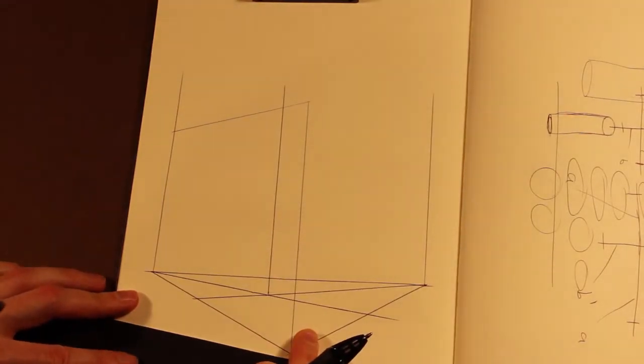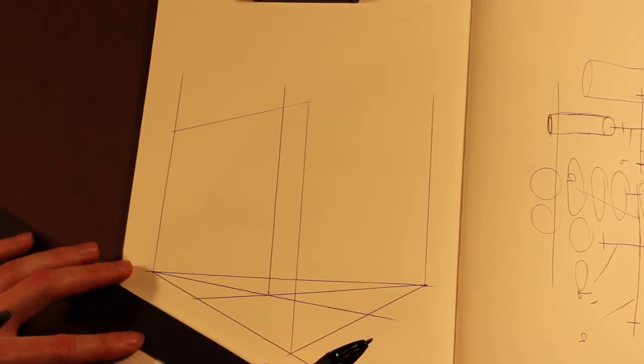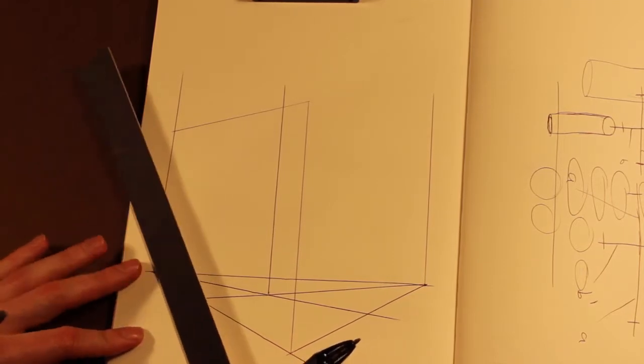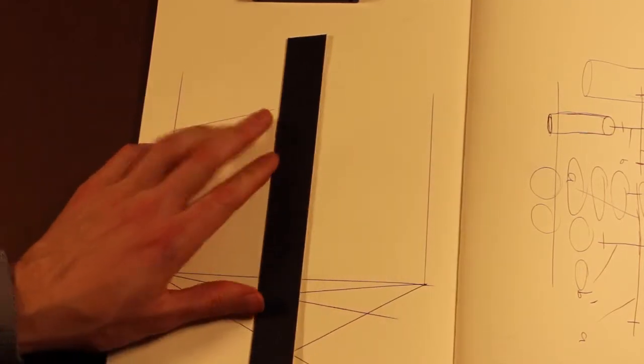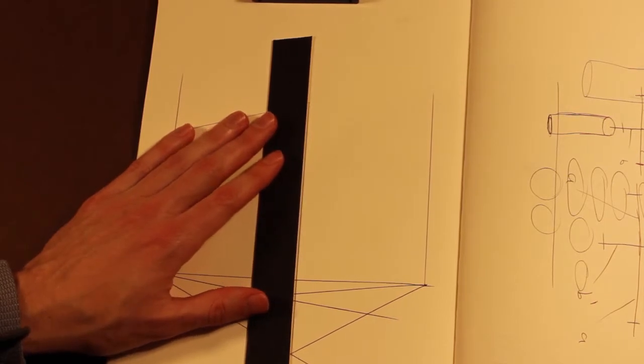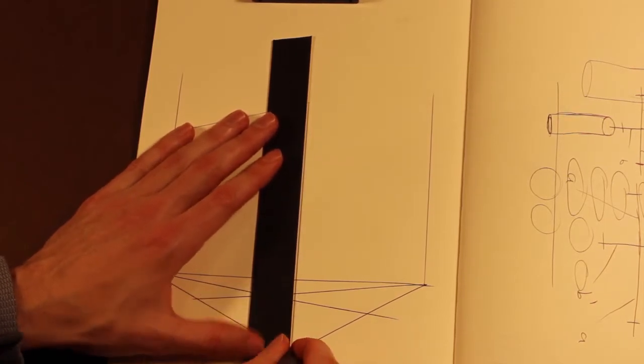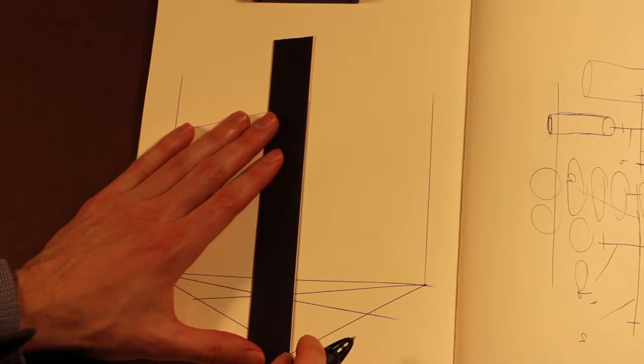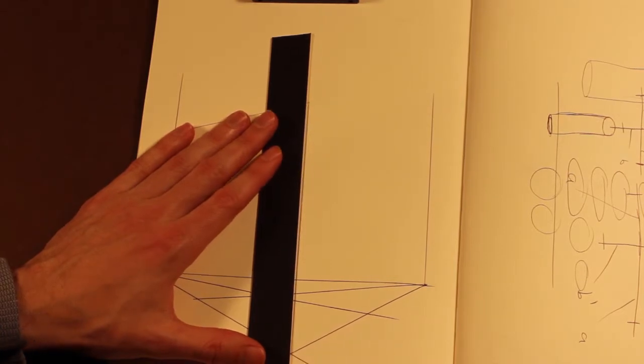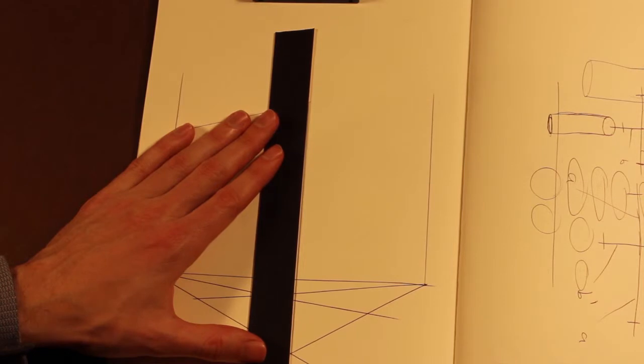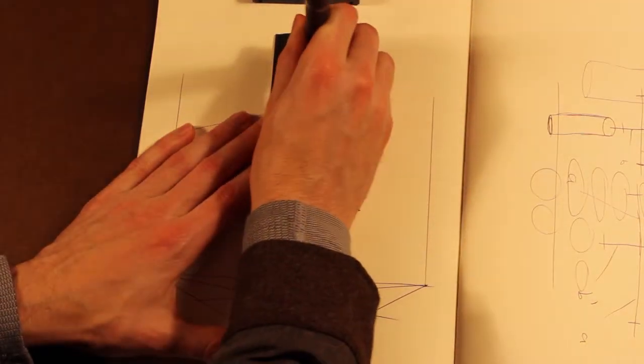So what actually happens is you need a third vanishing point so that all of your lines can recede to it. And generally, that vanishing point is going to be on this vertical. It doesn't necessarily have to be, but for the sake of this, that's what we're going to do. I'm going to put it right here.